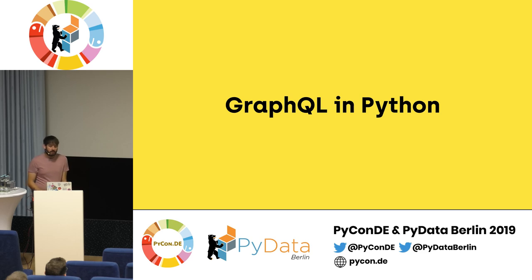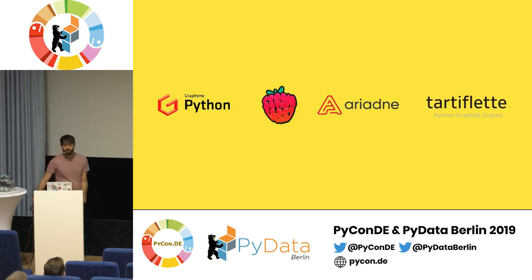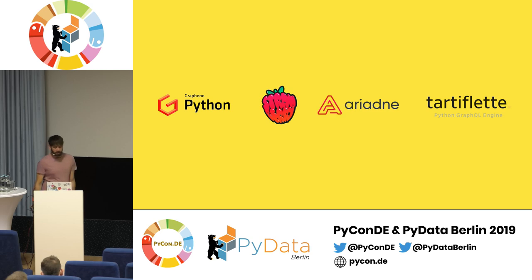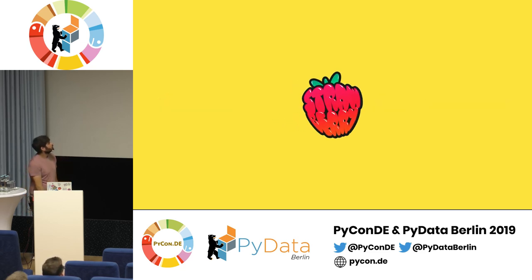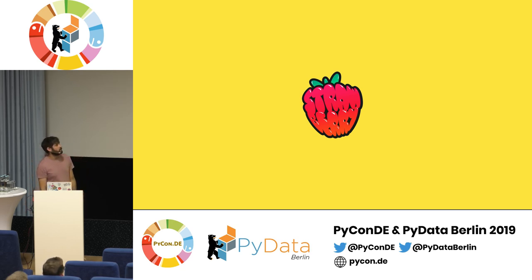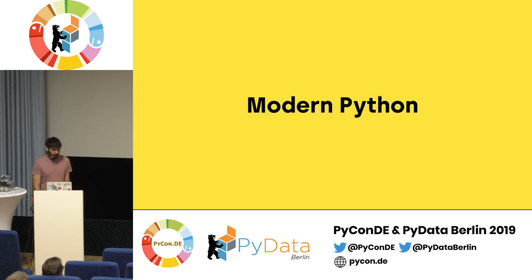Maybe at this point you want to try GraphQL. I'm quite happy that things have changed recently in Python, because until a year ago we used to have only one library, which is Graphene. But now we have more options — there is Strawberry, and then Ariadne and Tartiflette, which are quite new as well. It's really good to see that the ecosystem is improving. Today I'm going to introduce Strawberry, which is the one I've been working on. I used to contribute to Graphene, but then I decided to make something else just to scratch my own itch.